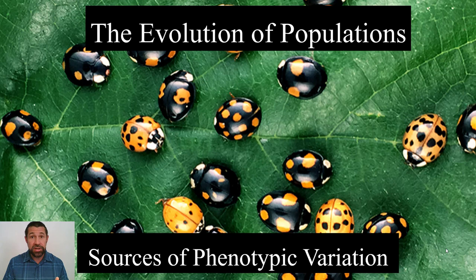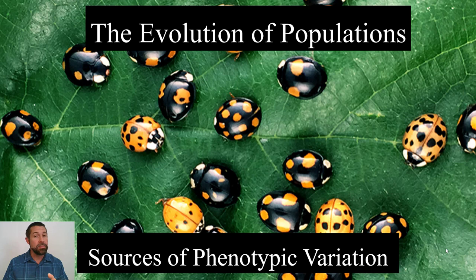Our primary goal today is to understand the two drivers — the two causes or sources of phenotypic variation. Remember the first observation that Charles Darwin makes about nature in his descent with modification by natural selection: the first thing he recognizes is that individuals vary.